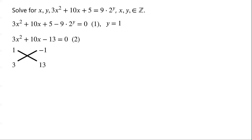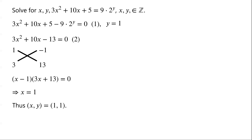So the left side of the equation can be factorized and written as (x minus 1) times (3x plus 13). The product of two terms equals 0, so either x minus 1 equals 0 or 3x plus 13 equals 0. For x minus 1 equals 0, we have x equals 1. For 3x plus 13 equals 0, there are no integer solutions. Thus (x, y) equals (1, 1) is the only solution.